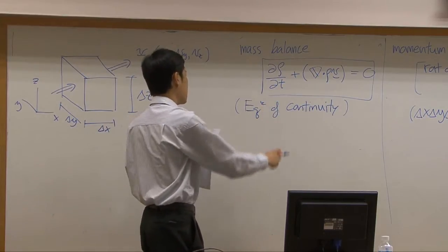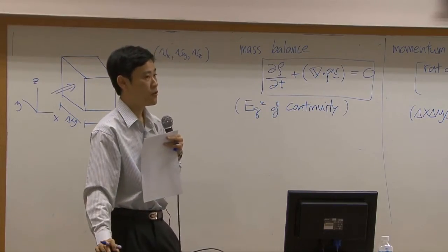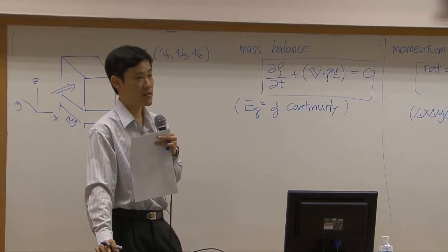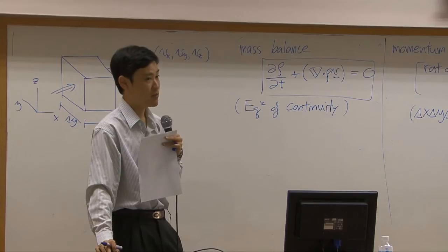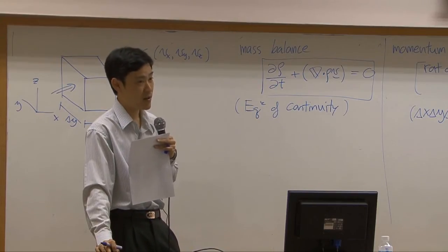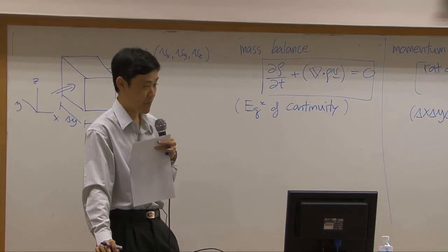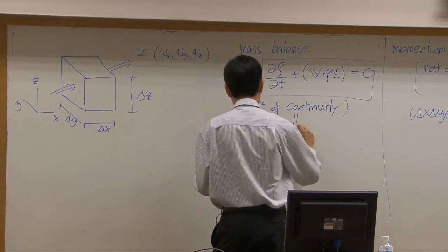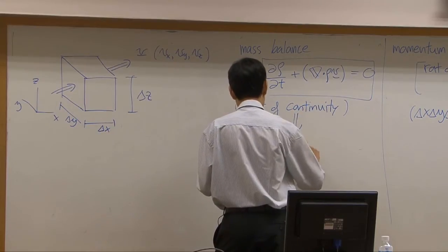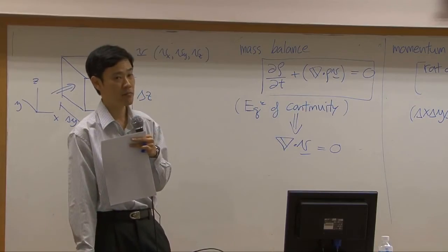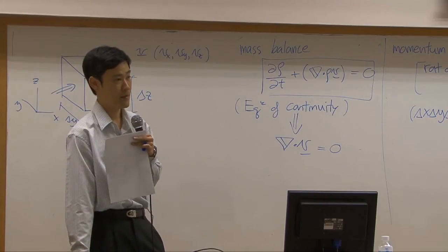Special case for mass balance here, if you consider the system of fluid which is incompressible, that means your density is constant with respect to position and with respect to time. Then equation continuity can be reduced into the form of delta dot v equal to zero. That can be used just for incompressible fluid.